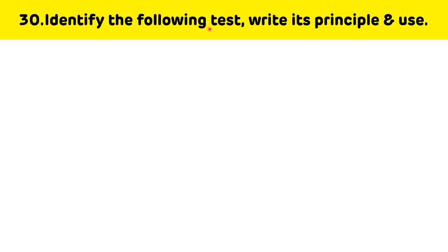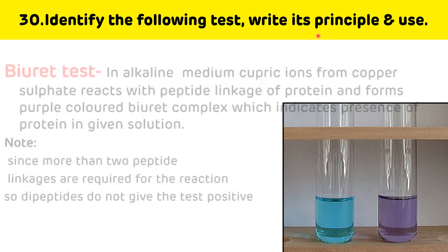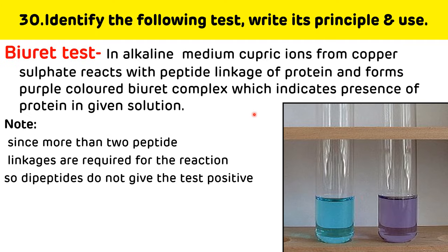Identify the following test, write its principle and use. This is the Biuret test, which is a general test for protein. In alkaline medium, cupric ions from copper sulphate react with the peptide linkages of protein to form a purple-colored Biuret complex, indicating the presence of protein. Since more than two peptide linkages are required, dipeptides do not give a positive test.